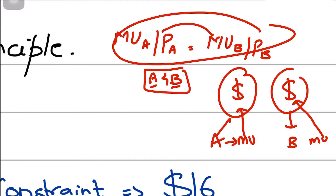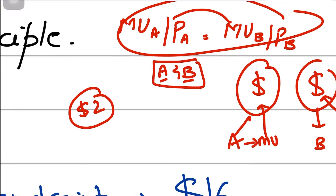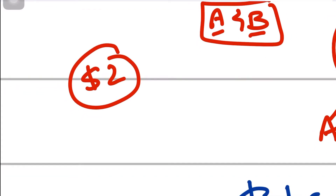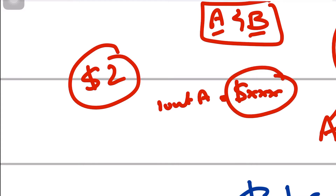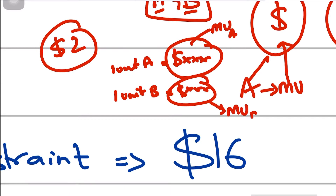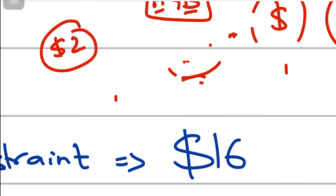What this basically means is that the last dollar spent on good A and the last dollar spent on good B should yield equal marginal utility. For example, if I have two dollars left after buying certain amounts of A and B, the utility I derive from buying one more unit of A should exactly equal the utility from buying one more unit of B.